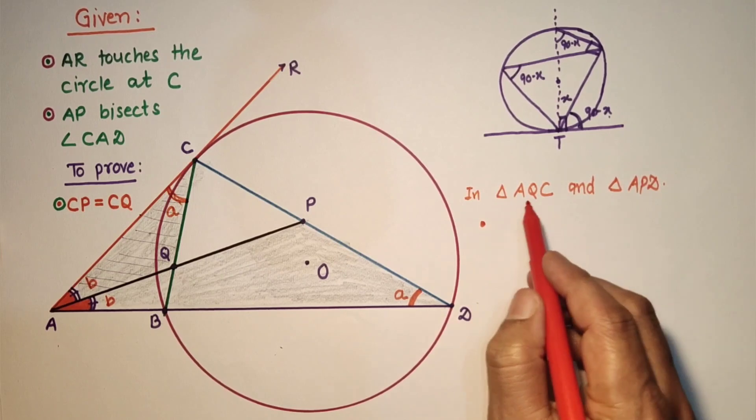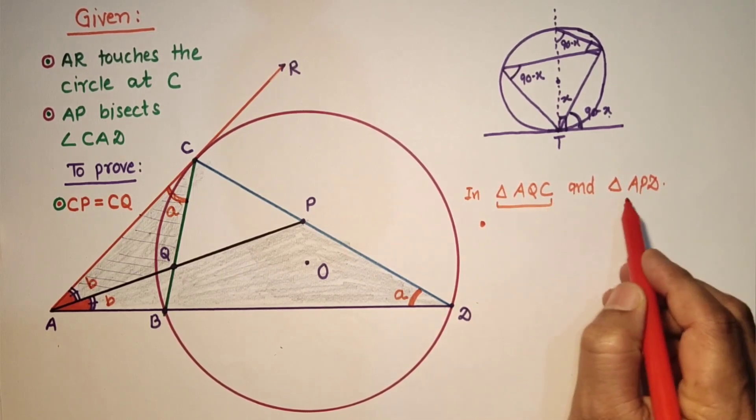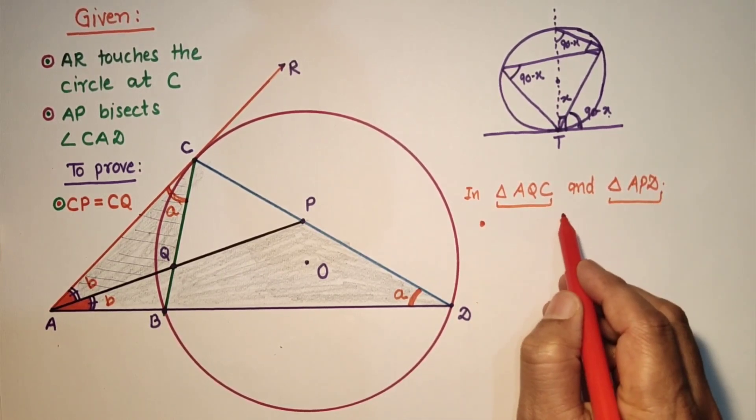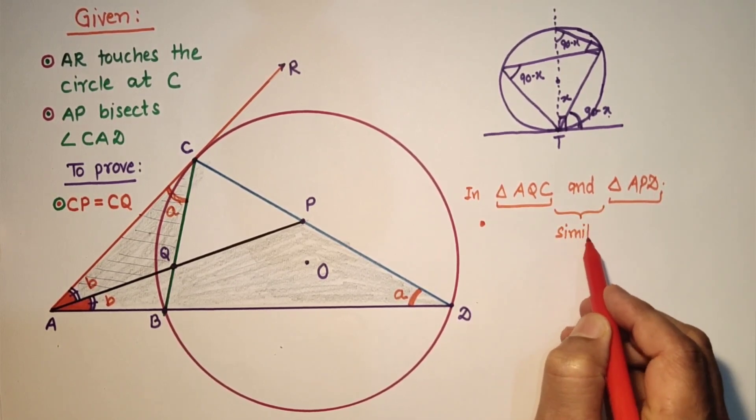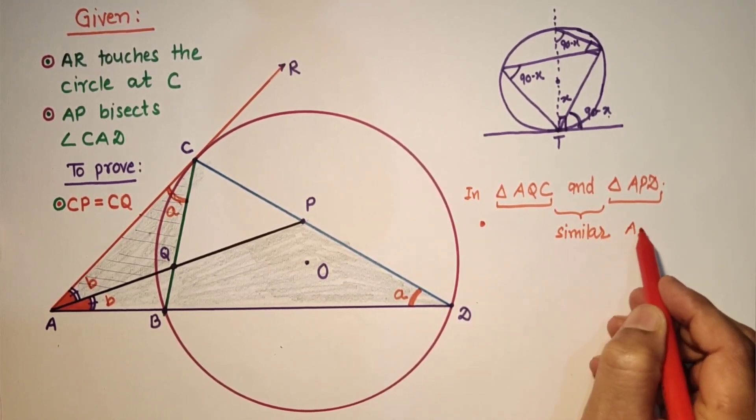So triangle AQC and APD triangles are similar by AA test of similarity.